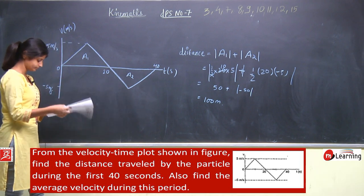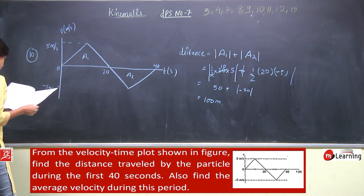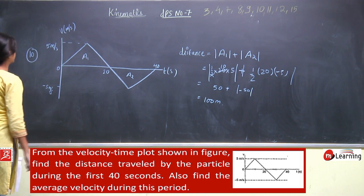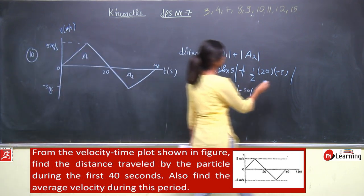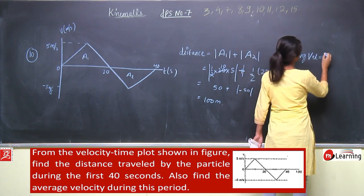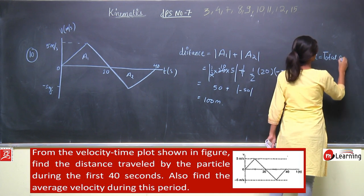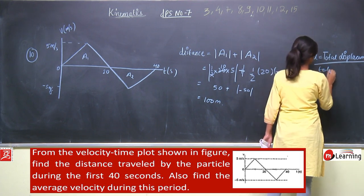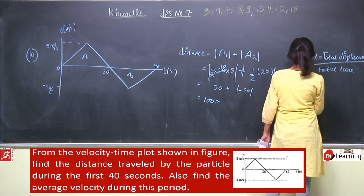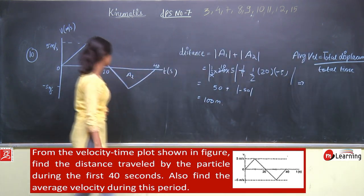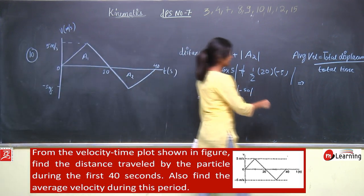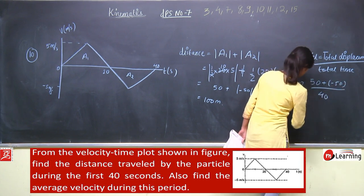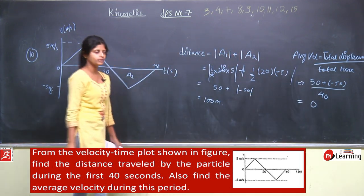Distance will be 100 meter. Second part: find the average velocity during this period. Average velocity is total displacement divided by total time. Total displacement will be A1 plus A2, that is 50 plus minus 50 divided by 40. That is 0. So average velocity will be 0.